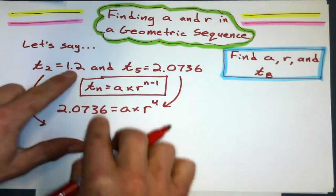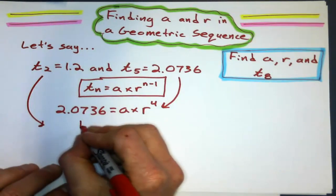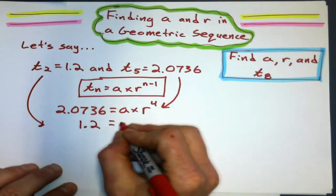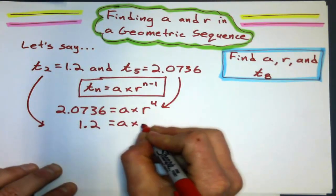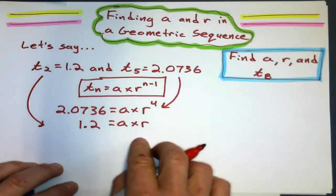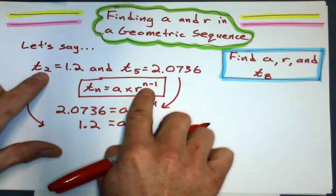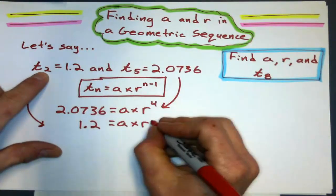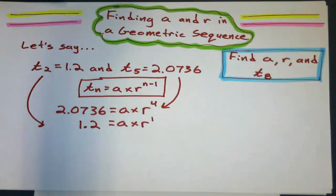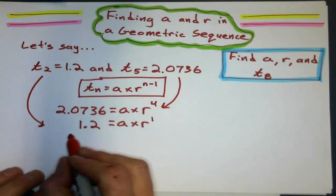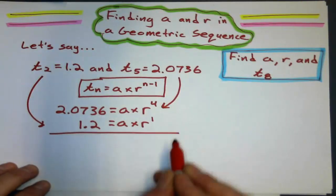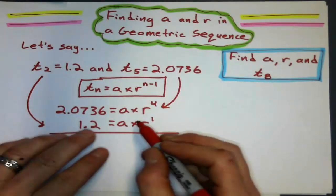Now let's do it for this one. The value of the second term, that guy, 1.2 equals the first term, which I don't know yet, times the common ratio, which I don't know yet, and n is 2. 2 minus 1 is just 1. So now, what I'm going to do is treat this like simultaneous equations.